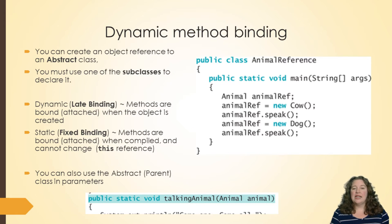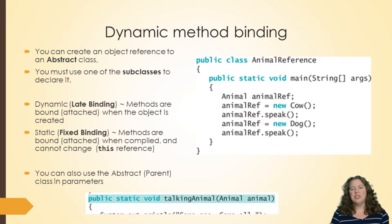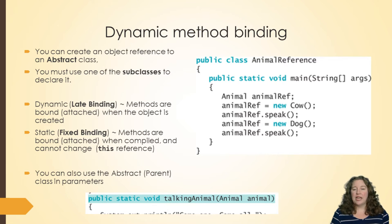This is called dynamic binding or late binding, because the variable animal reference doesn't know it's a cow until you tell it. Three lines later, we create a new dog, set animal reference equal to the dog, and run the speak command on that as well. So the animal reference can be set to any of the subclasses at any point. They don't get resolved at compile time — they get done at runtime, when the association is confirmed as whatever type you created.